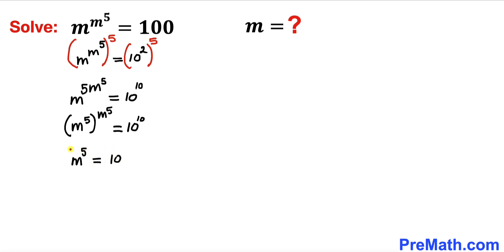Now let's go ahead and undo this power 5 by taking the fifth root on both sides of this equation. And now we can see that this fifth root and this power 5 undo each other. So therefore we are left with m equals the fifth root of 10.